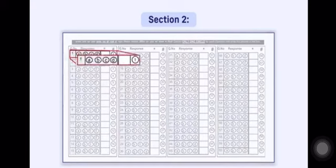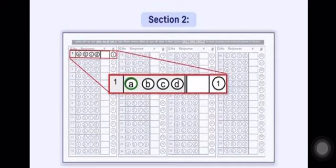For giving a response, four circles, that is A, B, C, and D, are given in front of each question in a row. You have to darken the correct response circle with a pen.